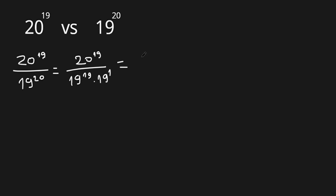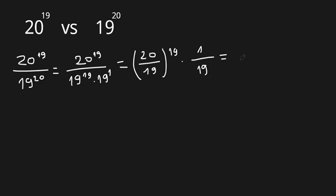Because 20 to the power of 19 has the same exponent as 19 to the power of 19, we can write it as the base 20 over 19, all to the power of 19, and then times 1 over 19.